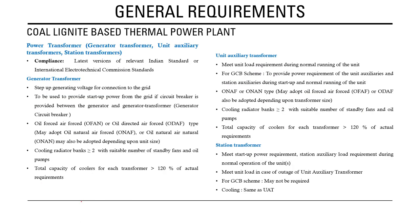At thermal power plants there are three types of transformers: generator transformers, unit auxiliary transformers, and station transformers. All must comply with the latest Indian standards or IEC standards for power transformers. The generator transformer steps up the generating voltage for connection to the grid, and where a generator circuit breaker (GCB) is provided, it can also provide startup power from the grid. Cooling types include OFAF, ODAF, or ONAN depending on unit size.